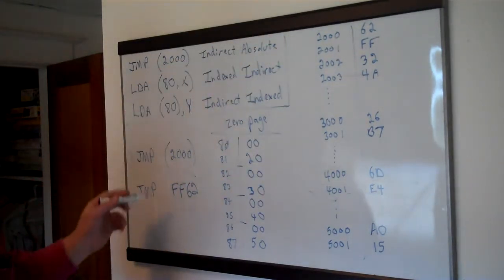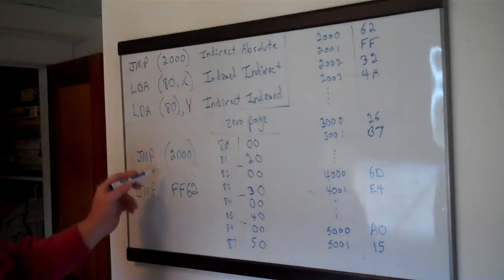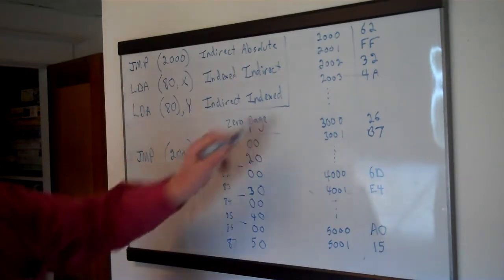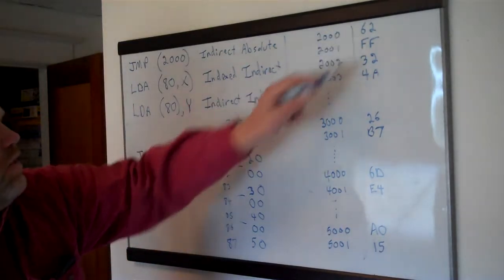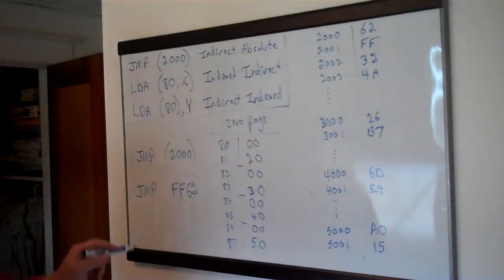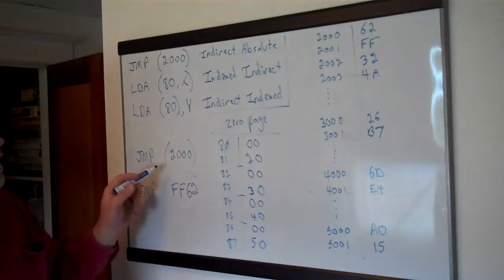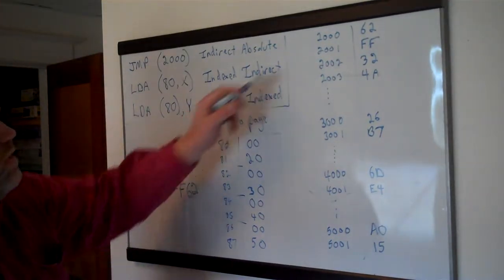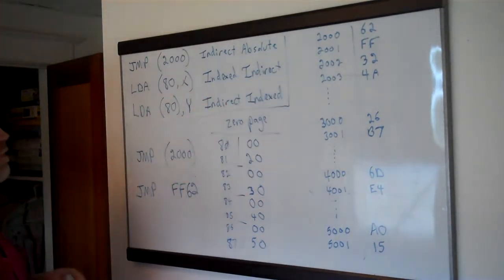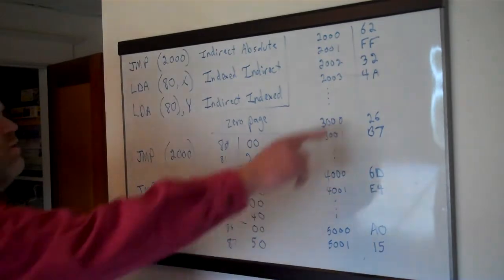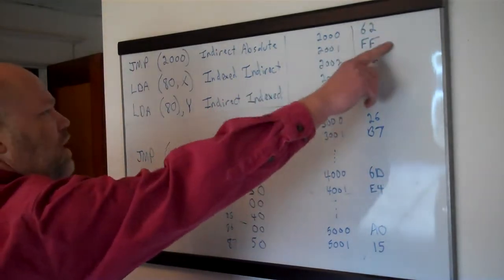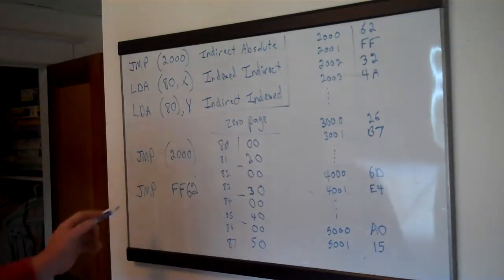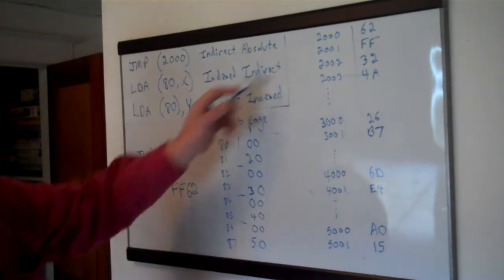The difference is if you're writing your program and you don't know what this address is going to be until the program has done some calculating, then you can use this as an indirect way to say: okay, we've filled in the address we want to jump to, now we can jump indirectly by putting parentheses around 2000 and we jump indirectly to the address being held at 2000.